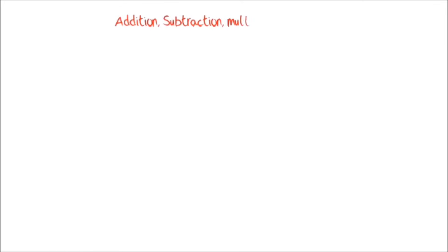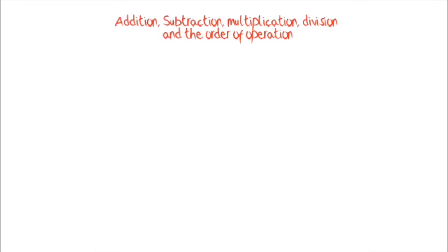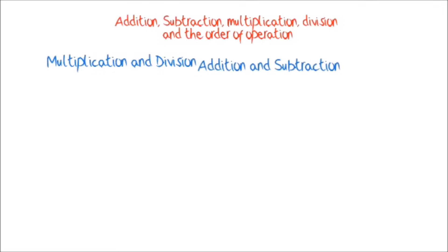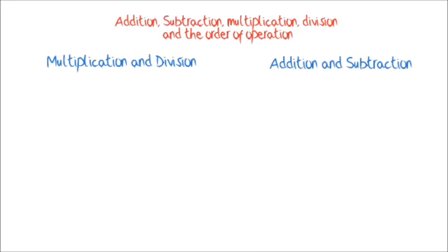Addition, subtraction, multiplication, division, and the order of operations. When we have a question that has addition, subtraction, multiplication, and division, we have to employ the order of operations. Multiplications and divisions are done first from left to right, and then addition and subtraction from left to right.